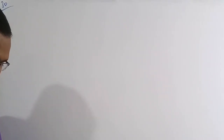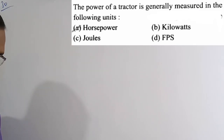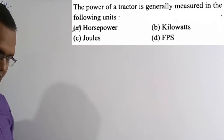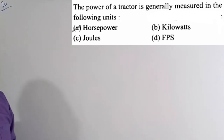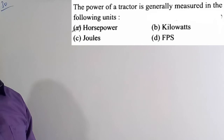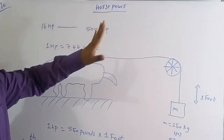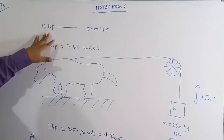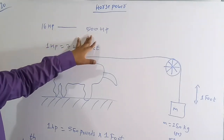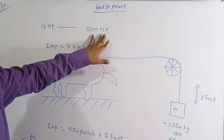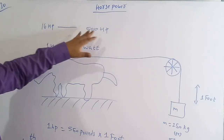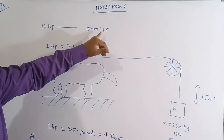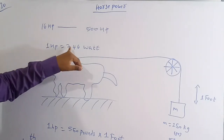Now for the last question: The power of a tractor is generally measured in which unit? Option A horsepower, option B kilowatts. Horsepower (HP) is the unit used for tractors. Tractors are generally measured from 16 HP to 500 HP — 16 HP being the smallest and 500 HP the largest currently available. One HP equals 746 watts.